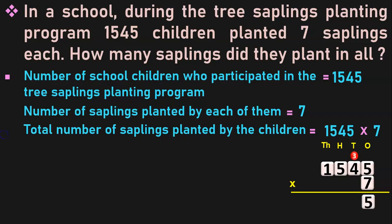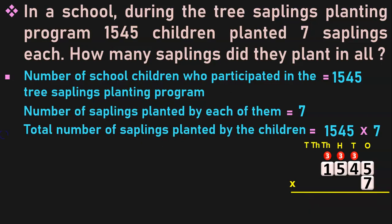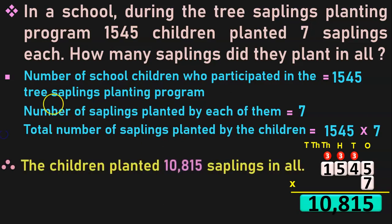5, carry over 3. Next, 7 into 4 is 28; 28 plus 3 is 31; 1, carry over 3. Next, 7 into 5 is 35; 35 plus 3 is 38; 8, carry over 3. 7 into 1 is 7; 7 plus 3 is 10. 0 and 1 will move to the ten-thousands place. So the answer is 10,815.